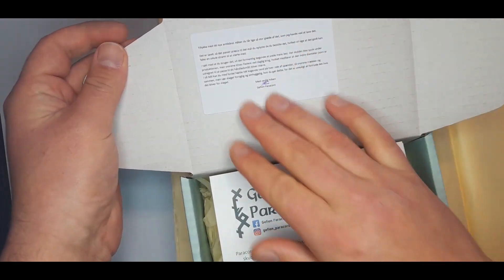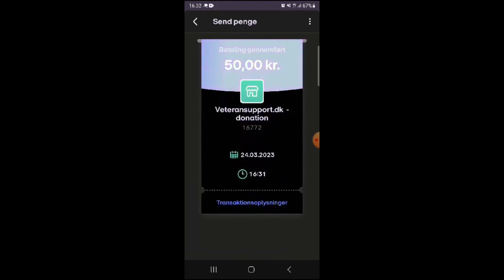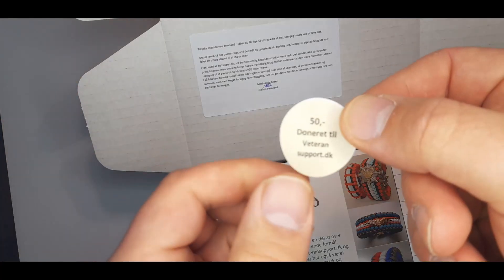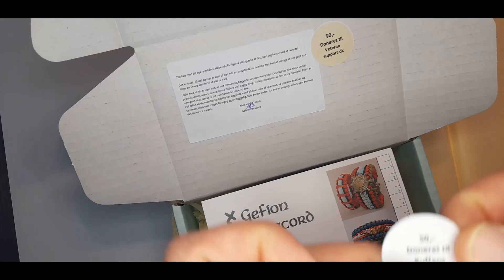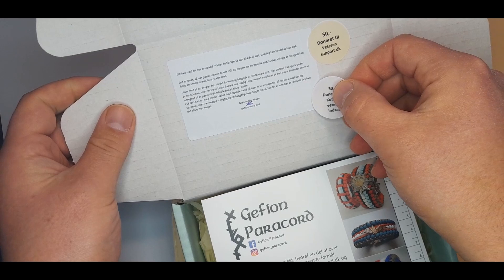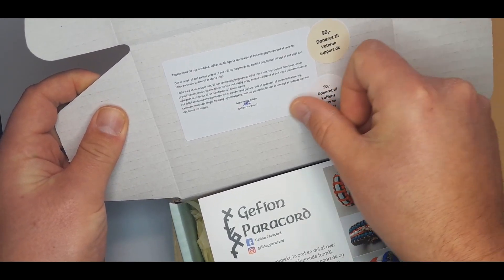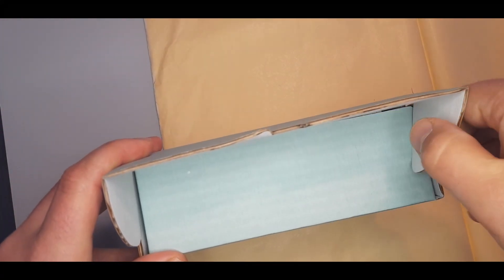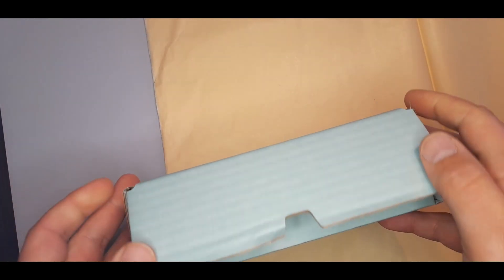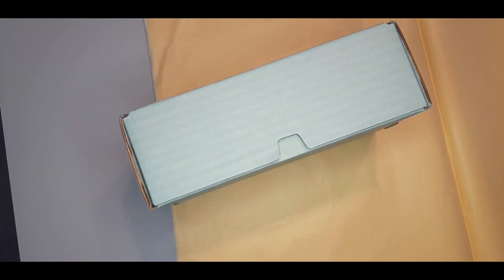Now as for these regimental bracelets, I give a donation to veteransupport.dk every time I sell one of them. And I also give a donation for the Danish version of the YMCA. They also have a veteran effort. So they also receive a donation on the same amount for their work. And that's about it. Closing down the box. And then I put on a sticker to make sure that it hasn't been tampered with.